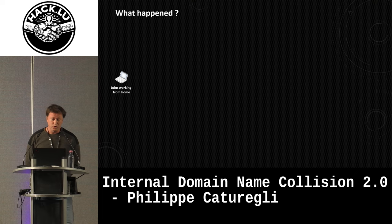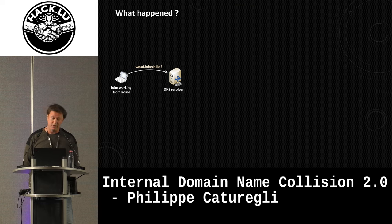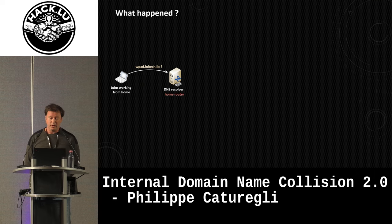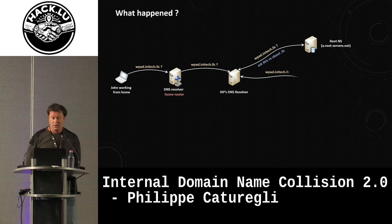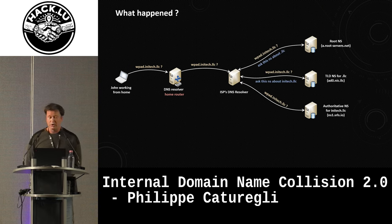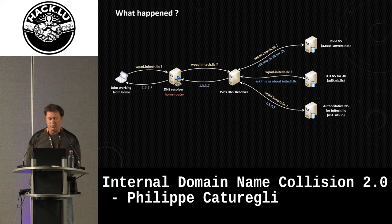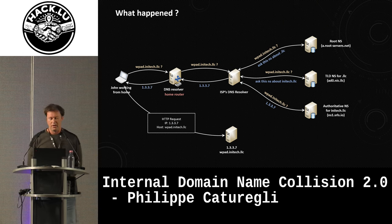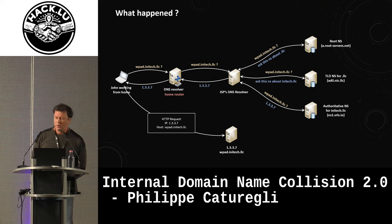When John is working from home, his browser still reaches out to the DNS resolver, except this time it's his home router. And because initec.llc is a valid, public, fully qualified domain name, it forwards the request to its ISP, and so on, until it reaches the authoritative name server for initec.llc — which was our server. At that point, we can return any IP address we want to John's browser, John's browser opens the proxy.pac that we serve him, and then we own his browser.